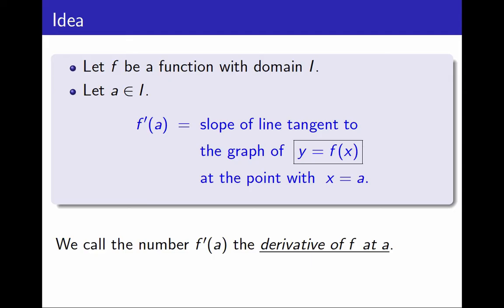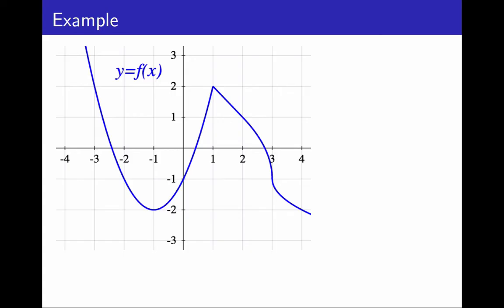For example, let's look at the function f defined by this graph. I want to compute f prime of 0. First, I find the point in the graph with x-coordinate 0. Then I draw the line tangent to the graph at that point. And that line has slope 2. This is just an estimate. So the derivative of f at 0 is 2.